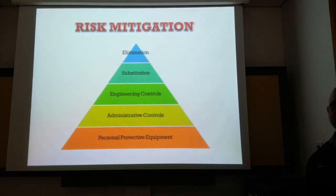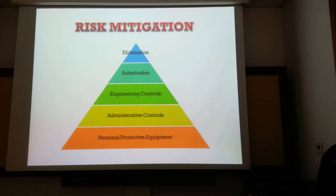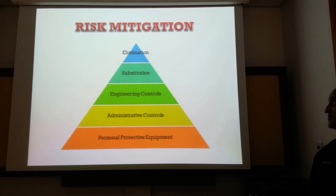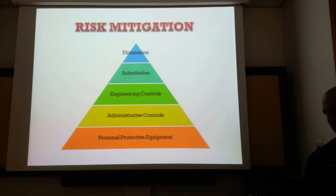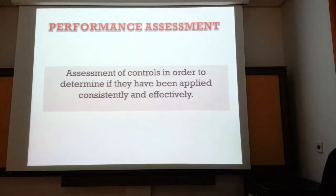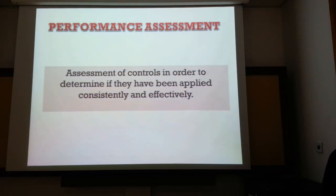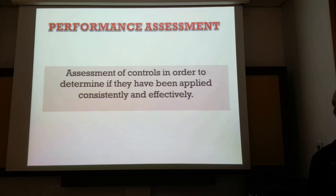Once we assess the risk, we mitigate it by applying five controls: elimination, substitution, engineering controls, administrative controls, and personal protective equipment. Once we have applied the controls, we assess their performance by carrying out an audit of the processes and standard operating procedures.